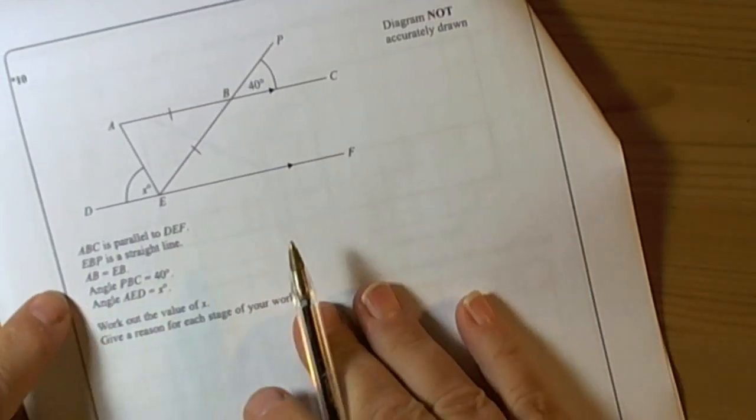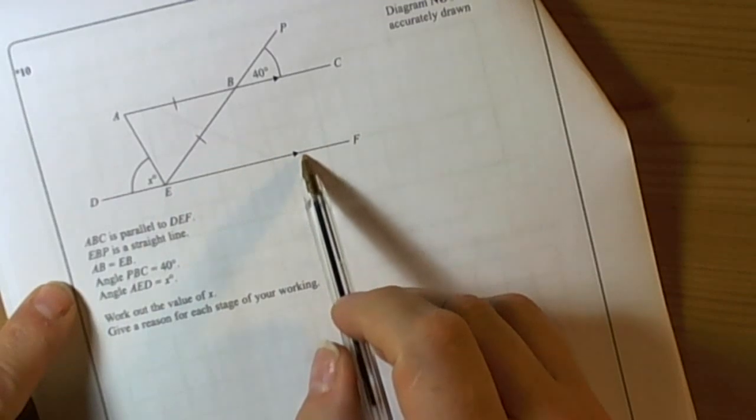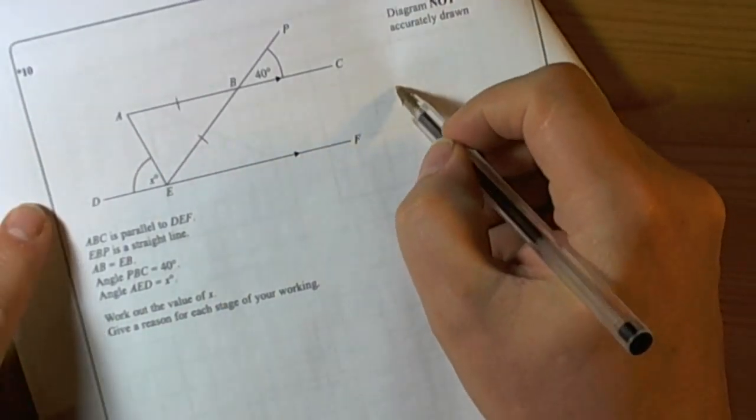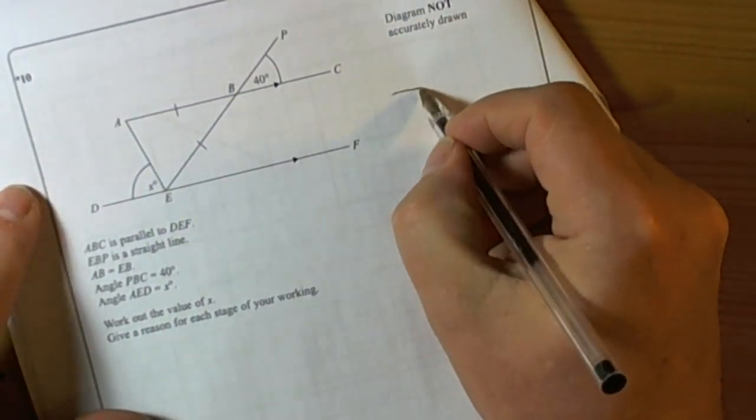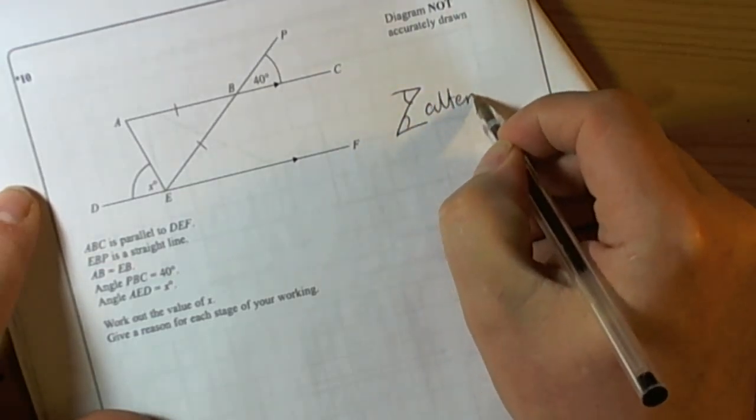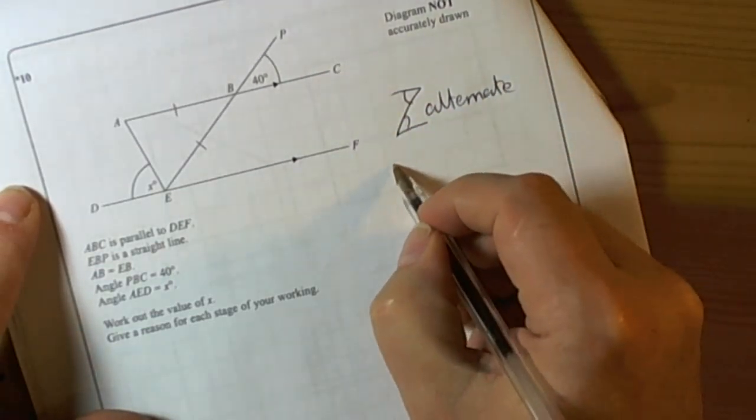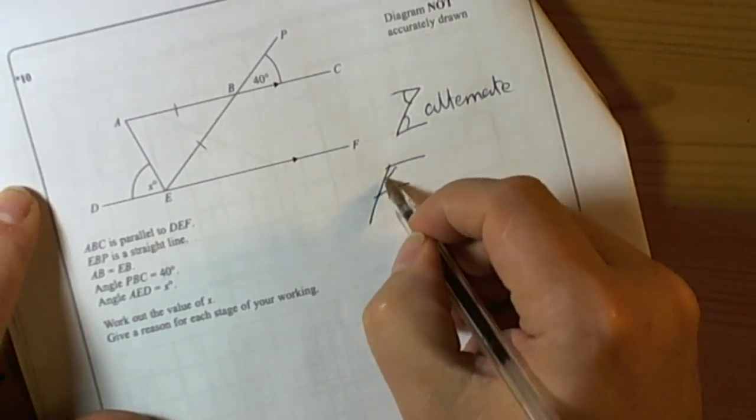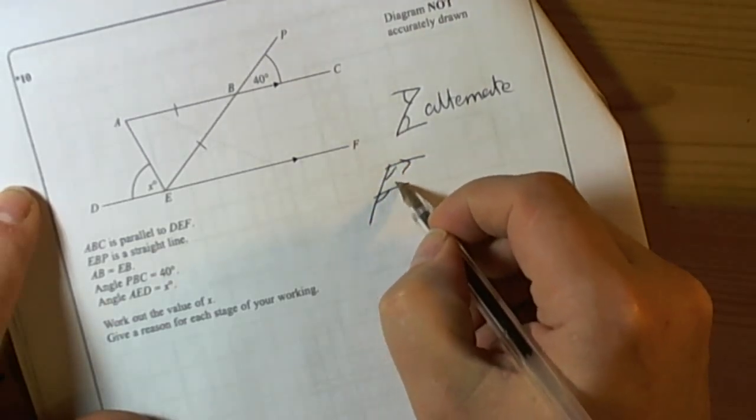Let's start looking at the information. We've got the arrows indicating parallel lines, so that should tell us straight away that we're likely to be either using the alternate angle or the corresponding angles where the parallel sides are there and there.